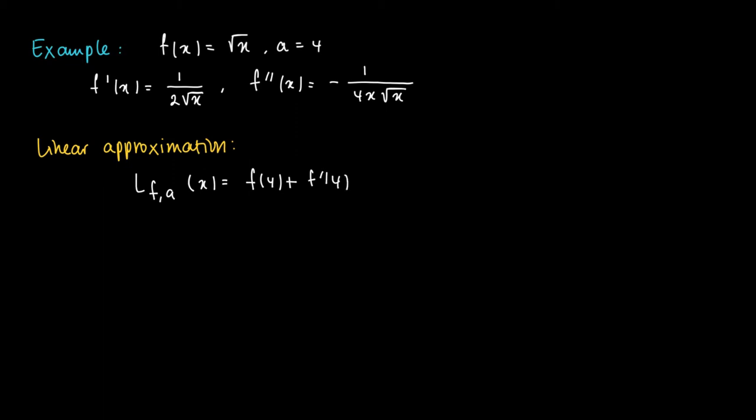The linear approximation L_f,a(x) is the function evaluated at a plus the derivative at a times (x minus a). This equals 2 plus 1 over 4 times (x minus 4), which equals 1 plus 1 over 4 times x.